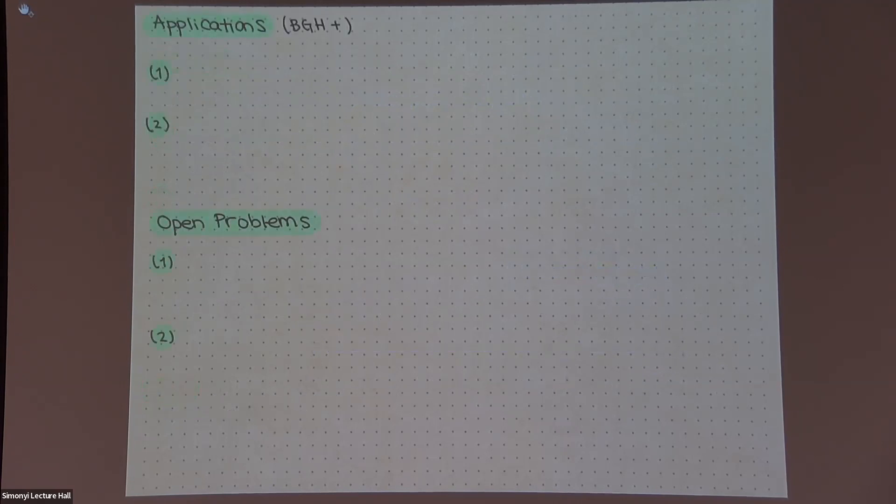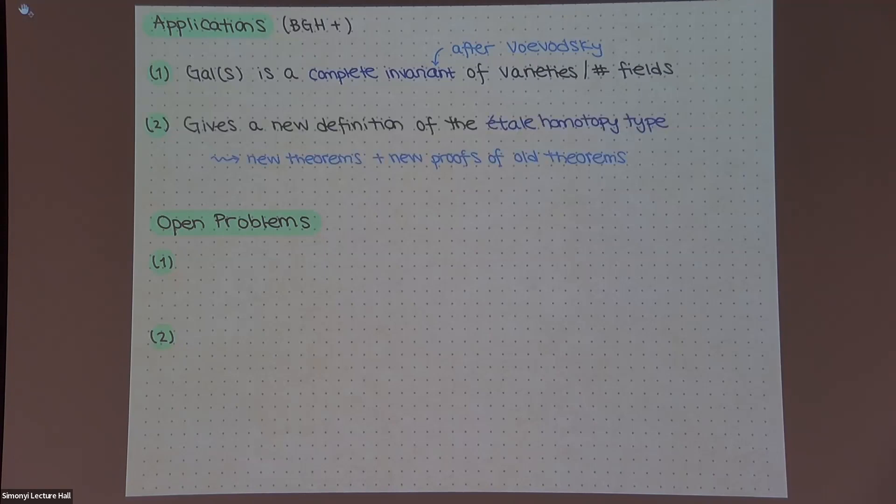Okay. So I'll finish with some applications of these ideas. So one thing that interested us was, well, it turns out that this object, it's a complete invariant of varieties over number fields. This uses as input some really important work of Voevodsky. So it completely determines these things. And there's also something called the étale homotopy type that's trying to assign homotopy types to varieties. And it gives a new definition of this. You can, from the thing we constructed, give a new definition of this. And one of the benefits is you get some new theorems and new proofs of old theorems from it.